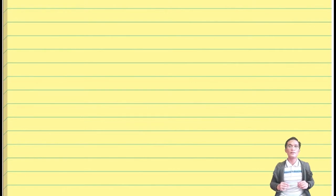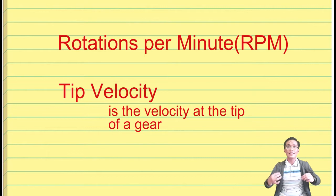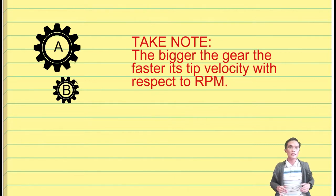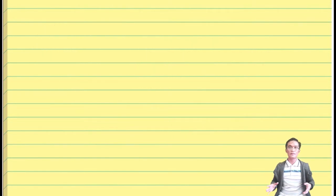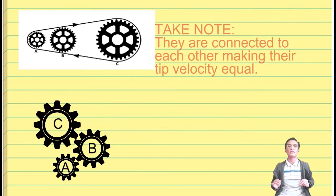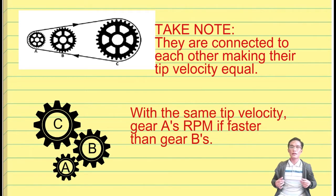The reason why speed changes with different size of gears is because of rotation per minute and tip velocity. Tip velocity is the velocity at the tip of a gear. As you increase the size of a gear, the tip velocity also increases with respect to the rotation per minute. If two gears have the same rotations per minute, the bigger gear has the faster tip velocity. But if we connect them in a chain, the tip velocity makes the rotation per minute change too, causing the smaller gears to rotate faster than the bigger gears.